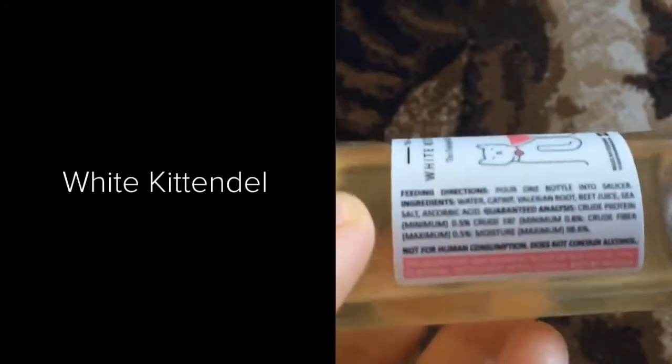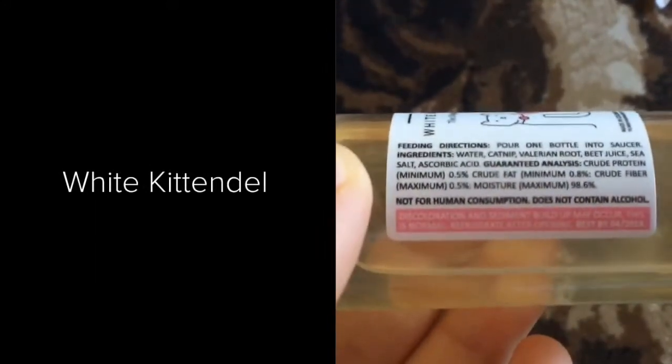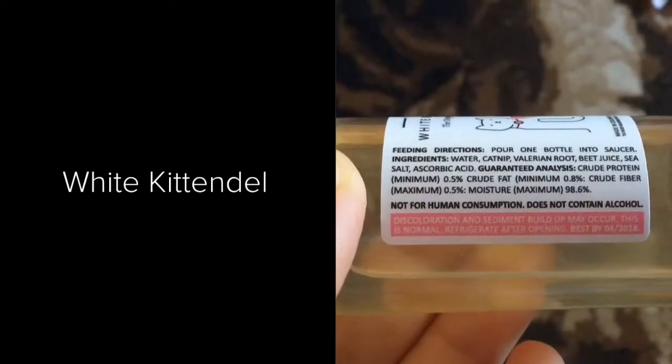Alright, so this one's White Kittendel. The ingredients are water, catnip, valerian root, beet juice, sea salt, and ascorbic acid.